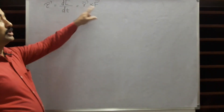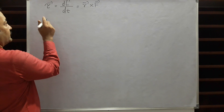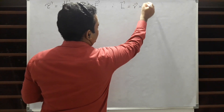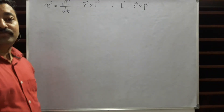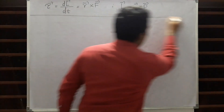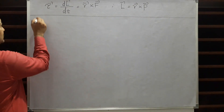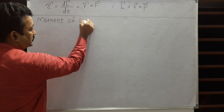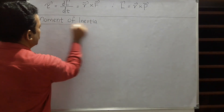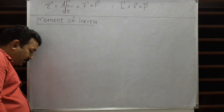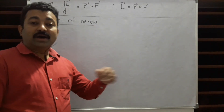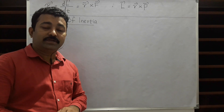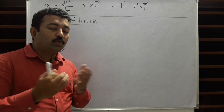Torque is called the moment of the force, and we have already got angular momentum as moment of momentum. Now let us see how we can get an analogous quantity for mass, which is called Moment of Inertia or Rotational Inertia. In translation, mass represents the amount of inertia, so in rotation also there should be a quantity representing rotational inertia. How can we define rotational inertia?